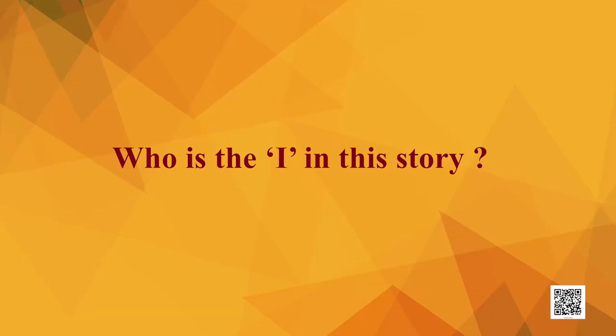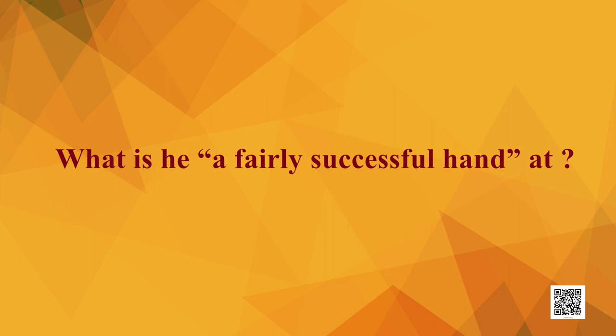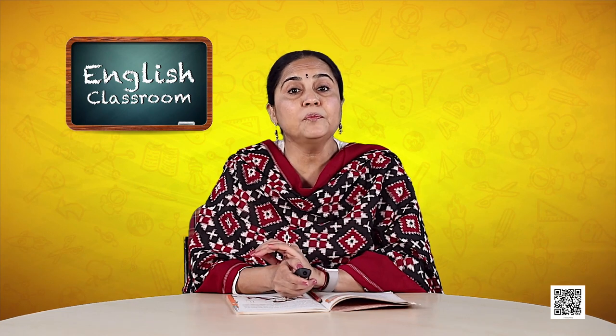So what is the profession of this person telling us his tale? The 'I' in this story is the thief. From these sentences and phrases we know he is a thief — he steals and robs people. What is he fairly successful hand at? He is successful at stealing. We are introduced to a person who is a thief and changes his name every month so that the police cannot catch him.